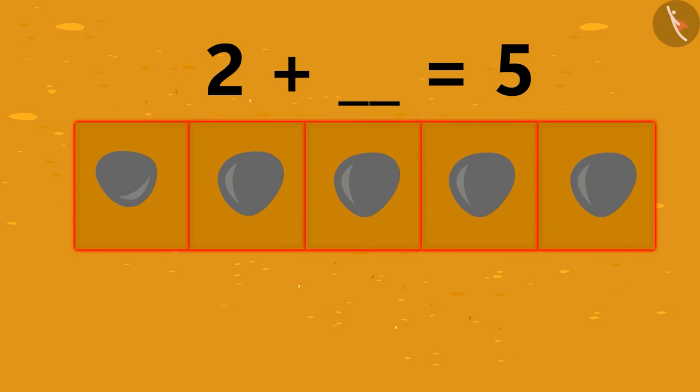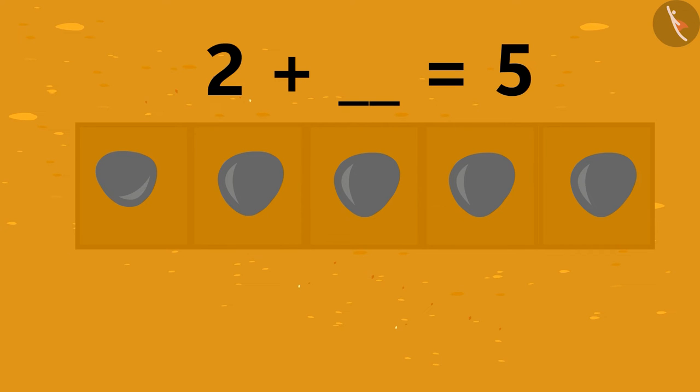This means that if we add three to two, it equals to five.